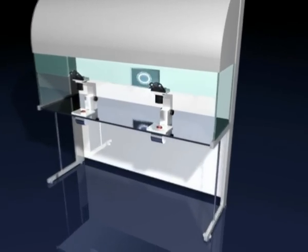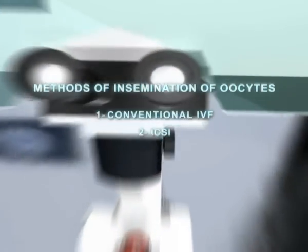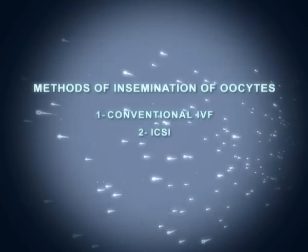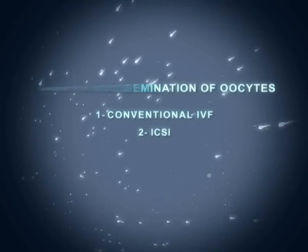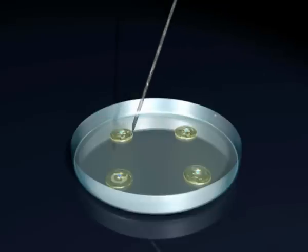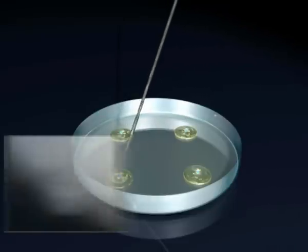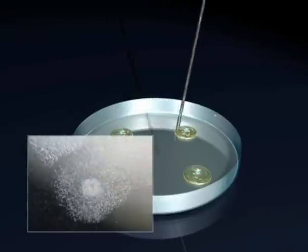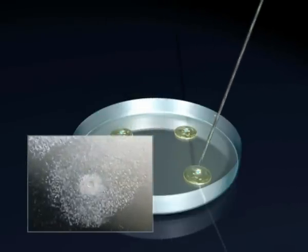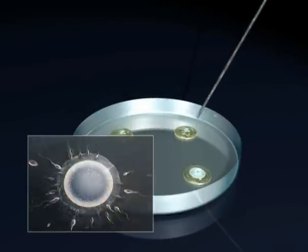There are two types of insemination of oocytes: the conventional way and using ICSI. In the conventional way, a micro-droplet of concentrated sperm is added to each of the wells containing the ova.